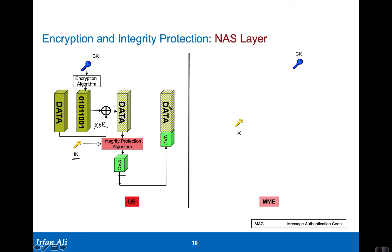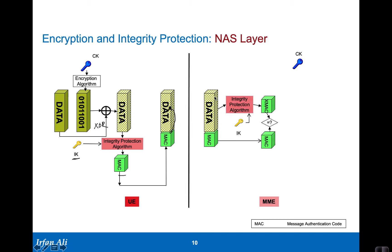If any bit is changed in the data, it would not match up with the message authentication code provided along with the data. This data along with the MAC is received at the MME. The MME first takes the same integrity protection algorithm — not an inverse, but the same algorithm — applied to the data to compute what the expected MAC is.